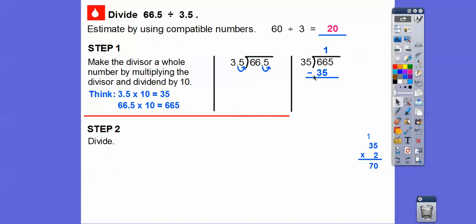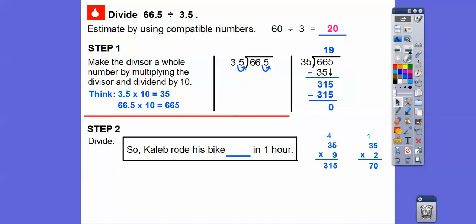35 times 1 is 35. If we did 35 times 2, it would give us 70, and 70 is too big to subtract from 66. When we subtract, we get 31 right there. Slide that 5 down. I know 35 times 10 is 350, so let's try 35 times 9, which is 315. Put the 9 up there and then subtract 315, and we get 0.